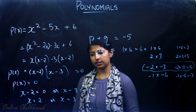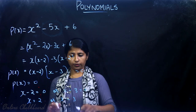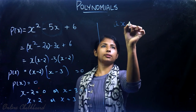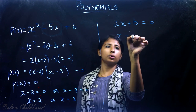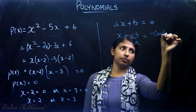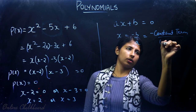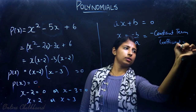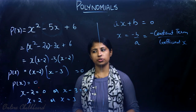Now our question is: what is the relation between the zeros of the polynomial and its coefficients? Let's recall that for a linear polynomial ax + b, the zero is x = -b/a, which is negative of the constant term by coefficient of x.